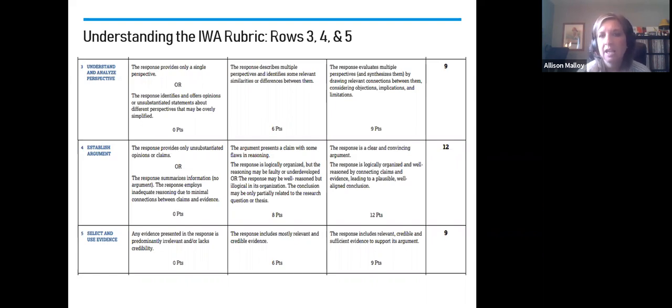You will notice that row four is the heaviest of all rows. It's worth the most points at 12 points. But this row is essentially looking at you providing a really clear and engaging and organized argument. You have a clear and convincing argument. It's logically organized. It's well-reasoned. Your claims are connected to your evidence and you have a plausible, well-aligned conclusion. The goal here is, did you make a claim? Did you use the evidence to support it? And were you complex in how you presented it considering limitations, implications, all of that stuff? The middle row, you presented a clear claim and argument, but you had a little bit of flaws. You were very organized, but maybe you're reasonably faulty in points, or maybe you could have been more organized as you put all of that stuff together. Unsubstantiated or it's just summary is going to get you those low scores.